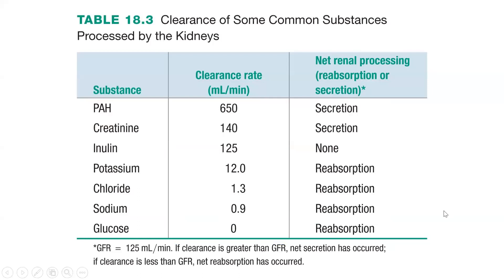Here's a table — not for memorization, but to be familiar with what's happening with clearance. Clearance rate refers to how much of a certain solute is excreted from the kidneys per minute, expressed in milliliters per minute. The general rule is: if the clearance rate is greater than the GFR, net secretion has taken place; if the clearance rate is less than the GFR, net reabsorption has taken place.